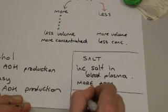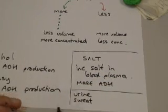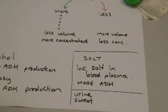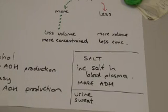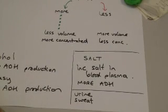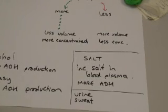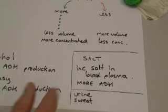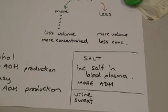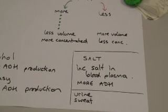The only other major place we would lose water apart from urine is in sweat. We do lose some in breathing and tiny amounts in tears as well, but those aren't things the body can easily control. The amount of urine produced is the main way to control how much water is lost from the body.